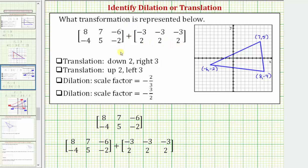To understand this type of transformation, we'll think of the elements in this first matrix as coordinates to points on the coordinate plane, where the first row would be the x-coordinates, the second row would be the y-coordinates, and therefore each column would be a point on the coordinate plane. So we can think of the first column as point A, the second column as point B, the third column as point C.